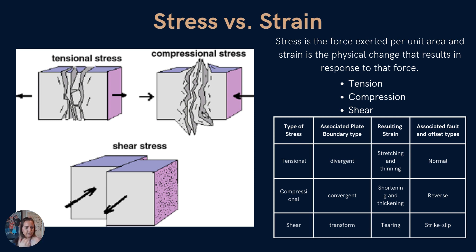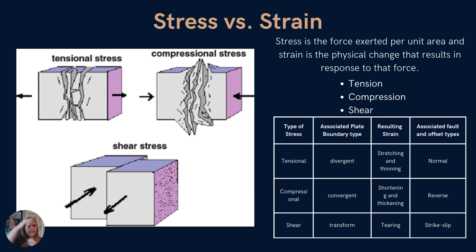With tensional stress, these are associated with divergent plate boundaries — pulling apart — so we see stretching and thinning of the crust, and the fault type we see is a normal fault. With compression, rocks are being pushed together, similar to a convergent plate boundary, which creates shortening and thickening of crust. We also see what we call reverse faults. With shear stress, things are being sheared apart, similar to a transform plate boundary. We see tearing, horizontal offset, and that is viewed as a strike-slip fault.